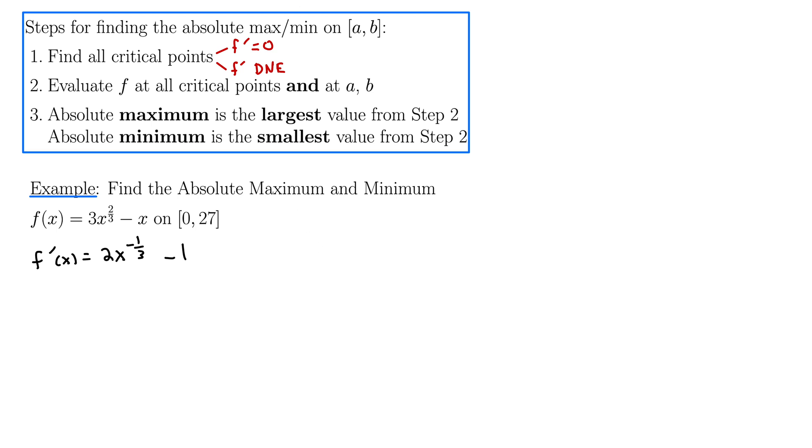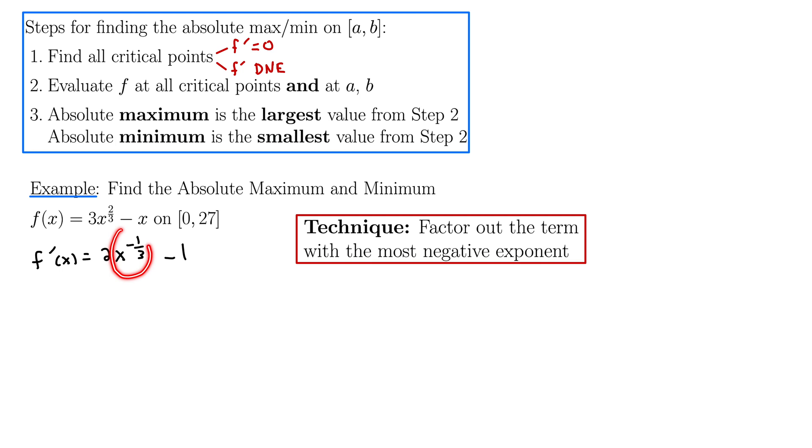And here we want to figure out where this derivative equals zero and where it does not exist. So here I'm going to use the technique for factoring out the term with the most negative exponent, which is the method that I recommend getting used to, but then I'll also show it at the end how to do it with the least common denominator. So the term with the most negative exponent is x^(-1/3). So I'm going to factor that out to the front.